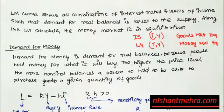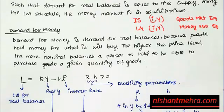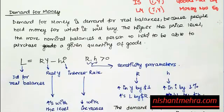When talking about money market equilibrium, you have to discuss the demand for money and the supply of money. People demand money for two purposes: one is the transactions demand for money, and the other is the speculative demand for money.